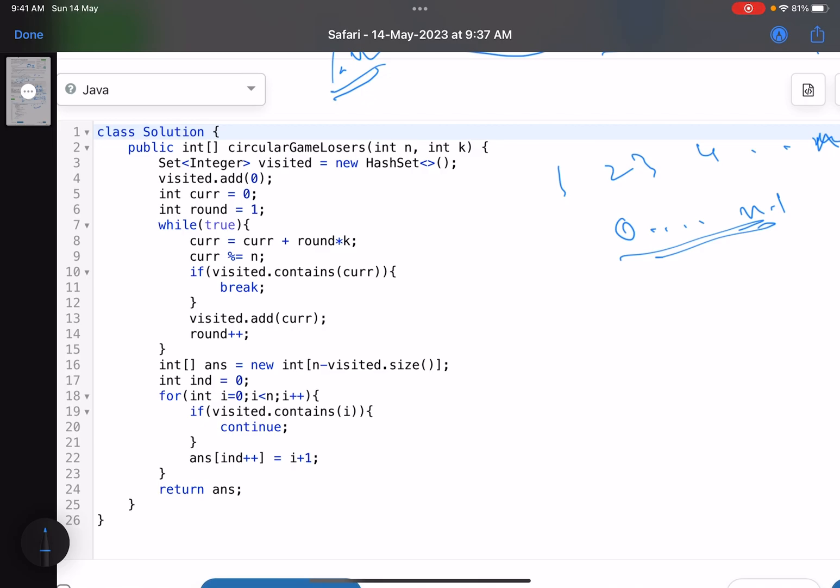This is the visited HashSet that I have taken to keep track of whether or not I have visited a particular value. Just see, zero guy, the first person is already visited, so I index that with i minus one. So first person is having an index zero. Current position is zero, or this is round number one. Current equals to current plus round into k, current mod n. So you know the new position. If visited.contains(current), that means if the new current has already been visited, you break the loop. Else what you do? You add that into your set and you increment the round.